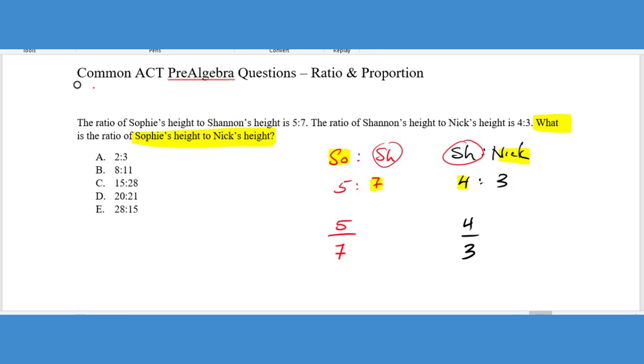So we want to get Shannon's height to the same value from a fractional standpoint. That way we can then make a like for like comparison. And so the way we do this is just to kind of find a common multiple between 7 and 4. And of course the easiest thing to do is to multiply them together to get 28. So let's go ahead and set this up. I'm going to do this with the fractions. If I want to do this on the original ratio, I'm going to multiply both parts of the fraction by 4. That's going to give us a fraction of 20/28. And then on the second one, I'm going to multiply the numerator and denominator by 7. That gives us a fraction of 28/21. So we can see that Sophie's height to Nick would be that of 20:21.